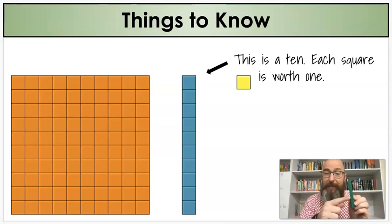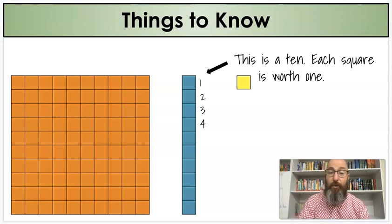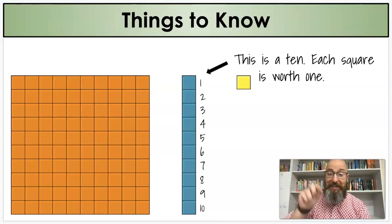Each square on a ten is worth one. So if you're looking at it, we see that there's one, two, three, four, five, six, seven, eight, nine, ten ones in that ten. So ten of these makes one of these.